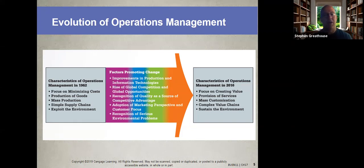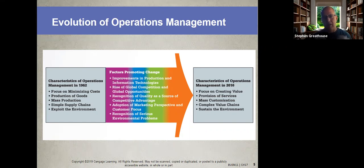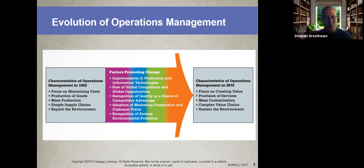By the 1970s, American manufacturing was getting beaten by high-quality products from Europe and especially Japan. Brands like Honda and Toyota became synonymous with quality. American manufacturers finally caught up in the 1990s, and now 'Made in America' or 'Made in Japan' signals quality, while manufacturing quality has broadly evened out globally.